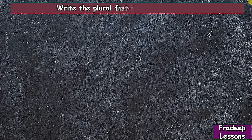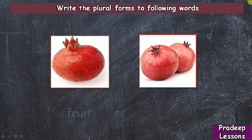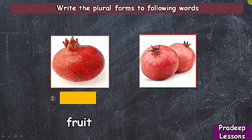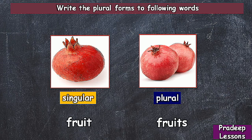Write the plural forms of the following words. Here there is only one pomegranate fruit — it is singular. In the second picture, more than one pomegranate are there — that is called fruits. Fruits is a plural.